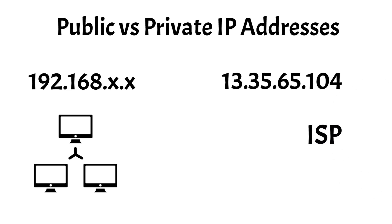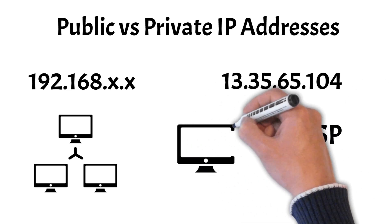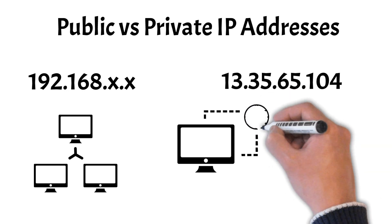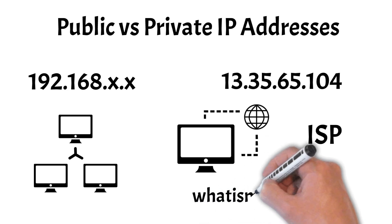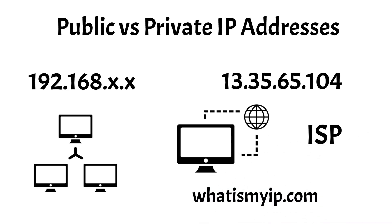and is unique across the entire internet, allowing devices to communicate with external networks and other devices globally. These addresses are routable on the internet and are necessary for accessing public websites and services. You can check your public IP address by visiting whatismyip.com.